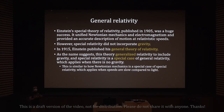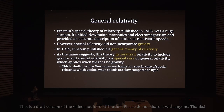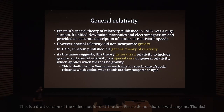If you need to deal with gravity — as is usually the case in astronomy when dealing with planets and stars — then you have to use general relativity, which is a more complicated theory. This is similar to how Newtonian mechanics is a special case of special relativity that applies when speeds are slow compared to light.